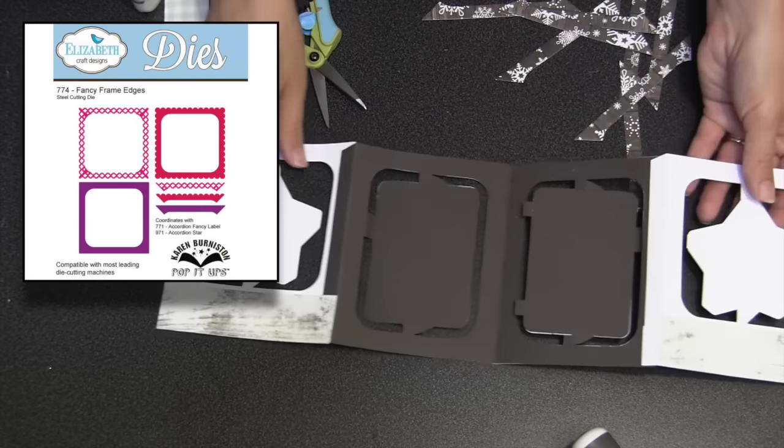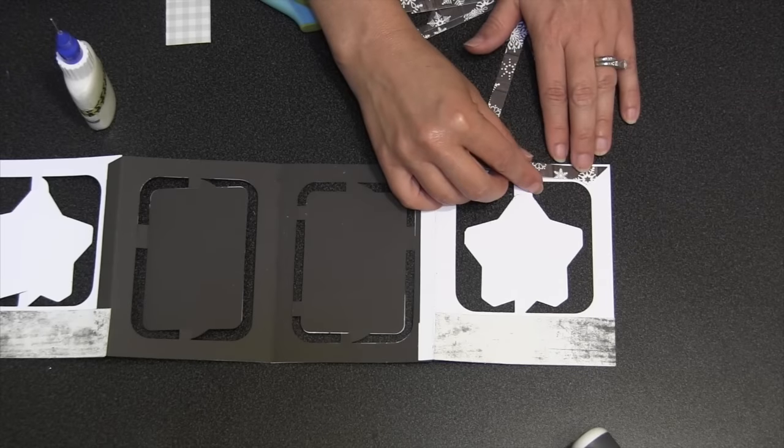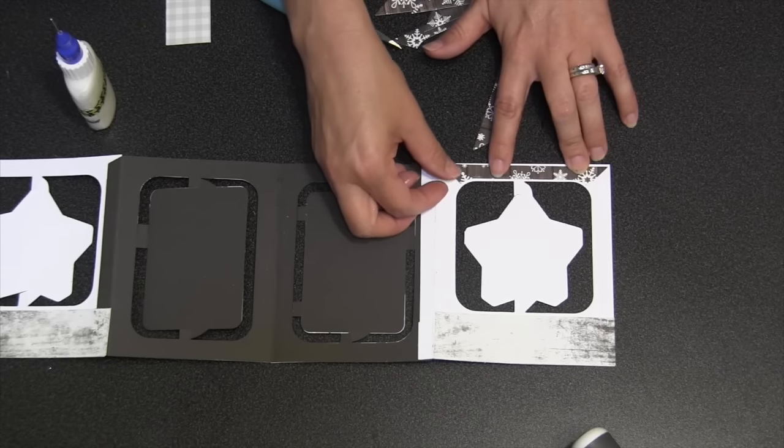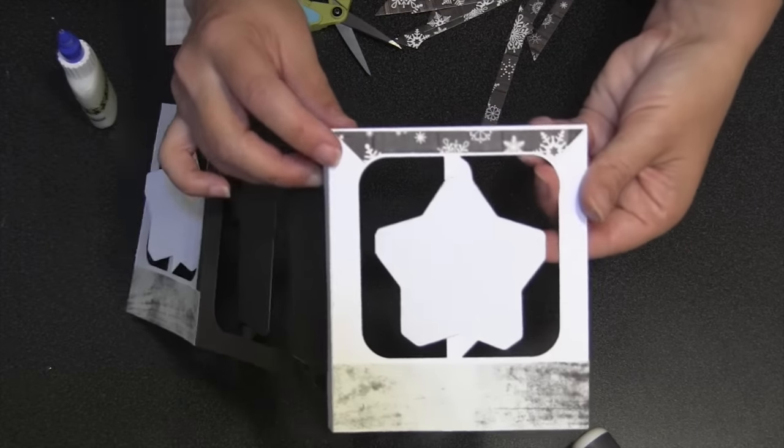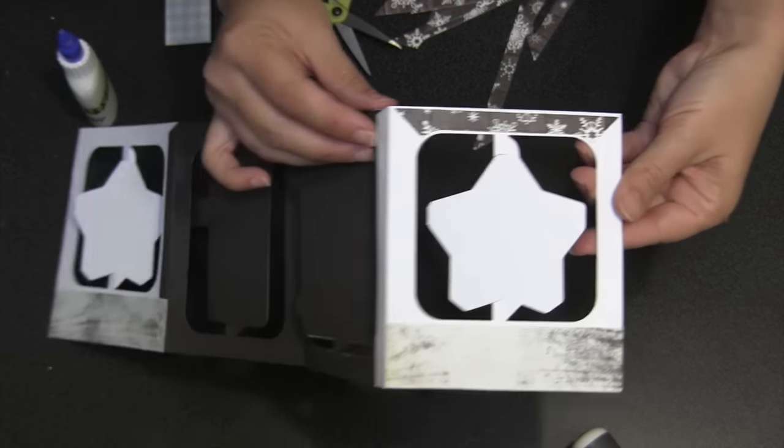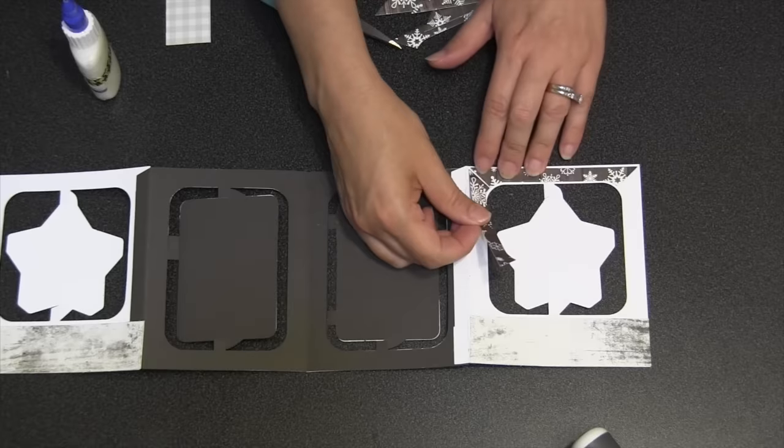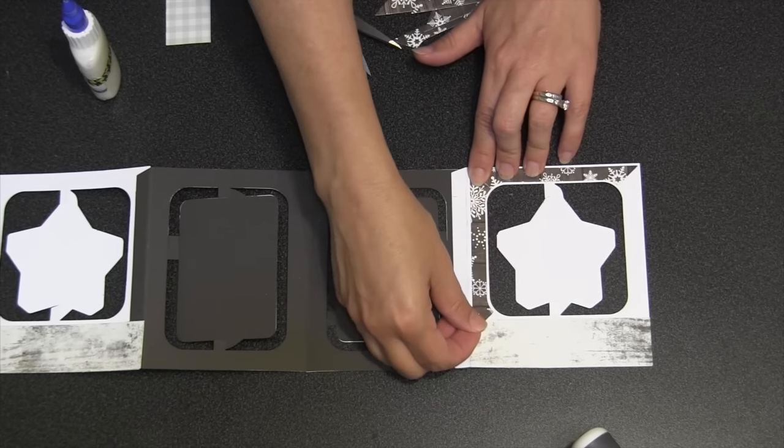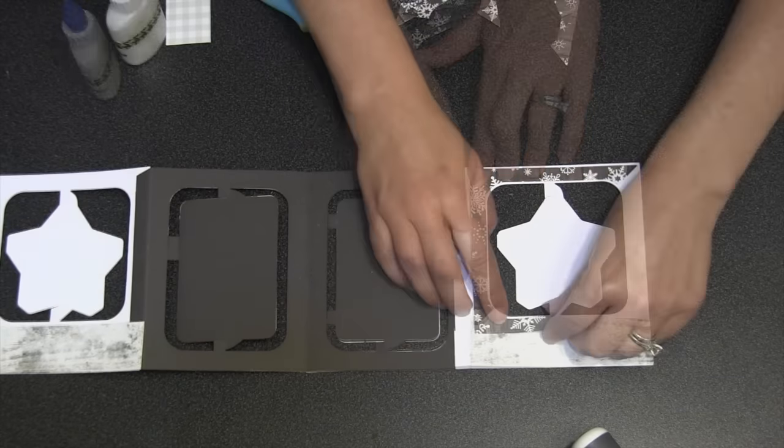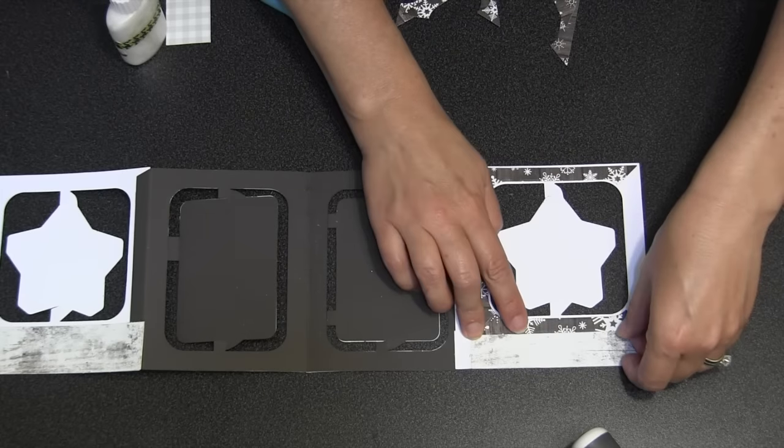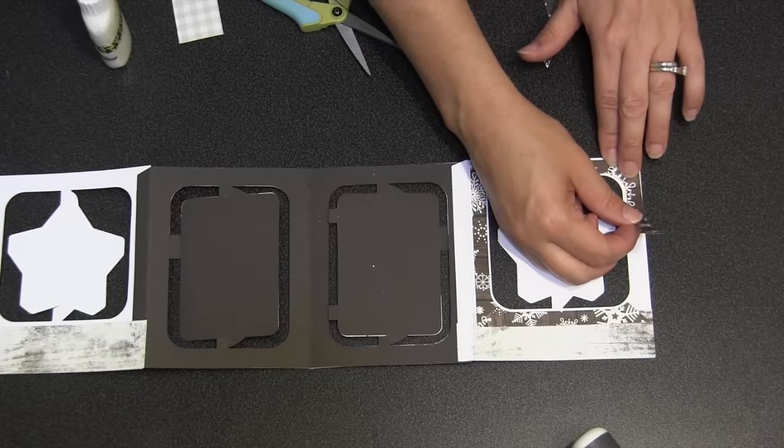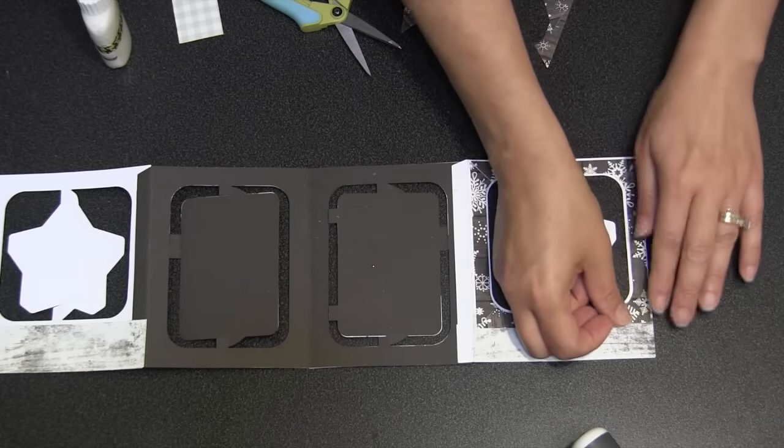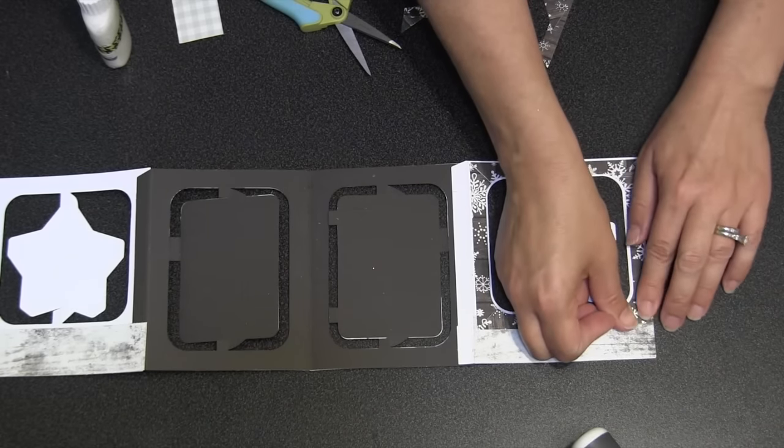I've used die number seven seventy-four, the fancy frame edges. And I've cut eight of the solid frame edge out of that snowflake pattern paper. Here's how frame edges work with the accordions. They actually leave an inside shadow and an outside shadow. And those shadows are even. So if you take your time with the first one, making sure that you leave a nice, straight, even shadow, both outside the frame edge and inside the frame edge, from there it becomes very easy. You just butt up the next frame edge to the one before it. Just pay attention to that inside shadow so that it stays nice, straight and even. Then you can go all the way around the accordion, adding your frame edges. They will line up just perfectly and give you a beautiful frame.